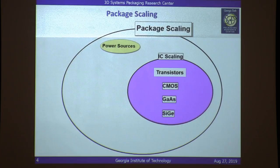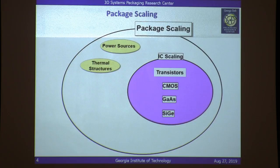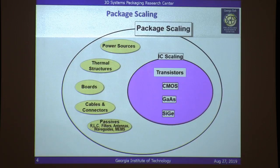To get transistors to work, you need power sources — a battery. You need thermal structures to get heat out, because not all transistors are very efficient. You need board-level technology to connect all the ICs together, cables and connectors to interface with the outside world, and lots of passive elements — resistors, inductors, capacitors, filters, waveguides, MEMS structures. That's where the functionality comes in.